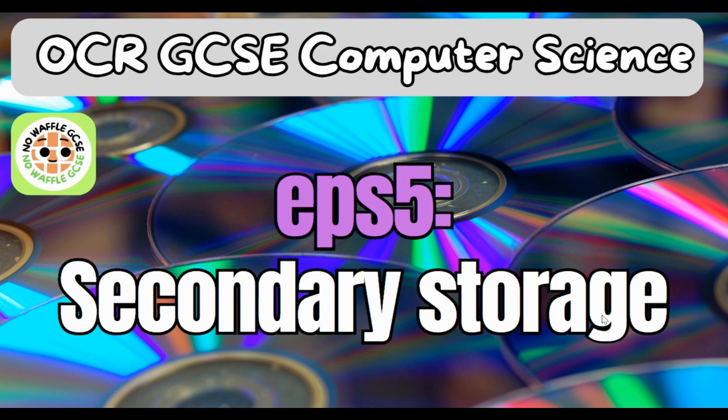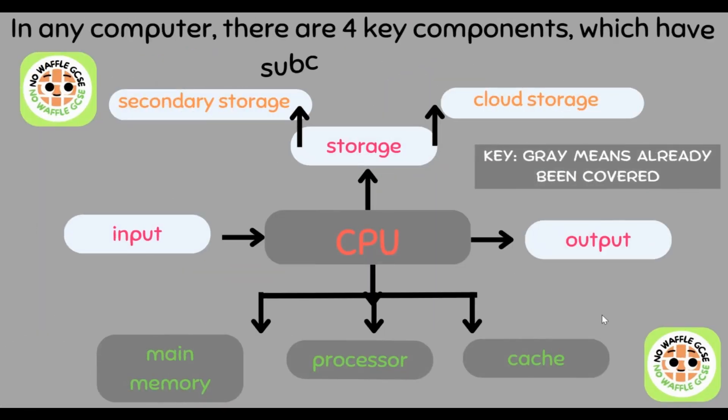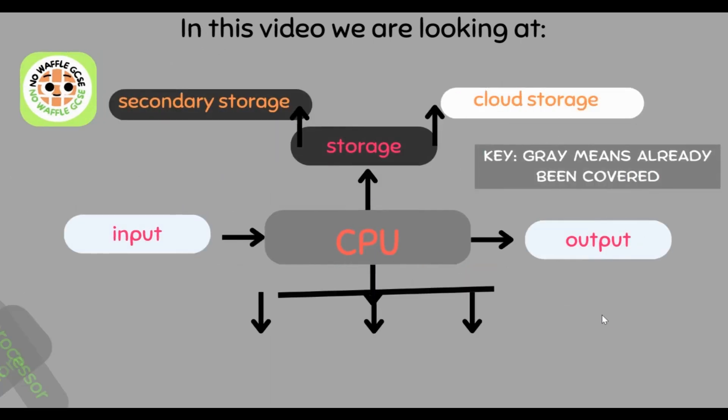OCR GCSE Computer Science, Episode 5: Secondary Storage. In any key computer there are four key components, which all have sub-components: the CPU, the inputs, the outputs, and the storage. We've already covered the CPU, and in this video we will be covering storage — particularly secondary storage.